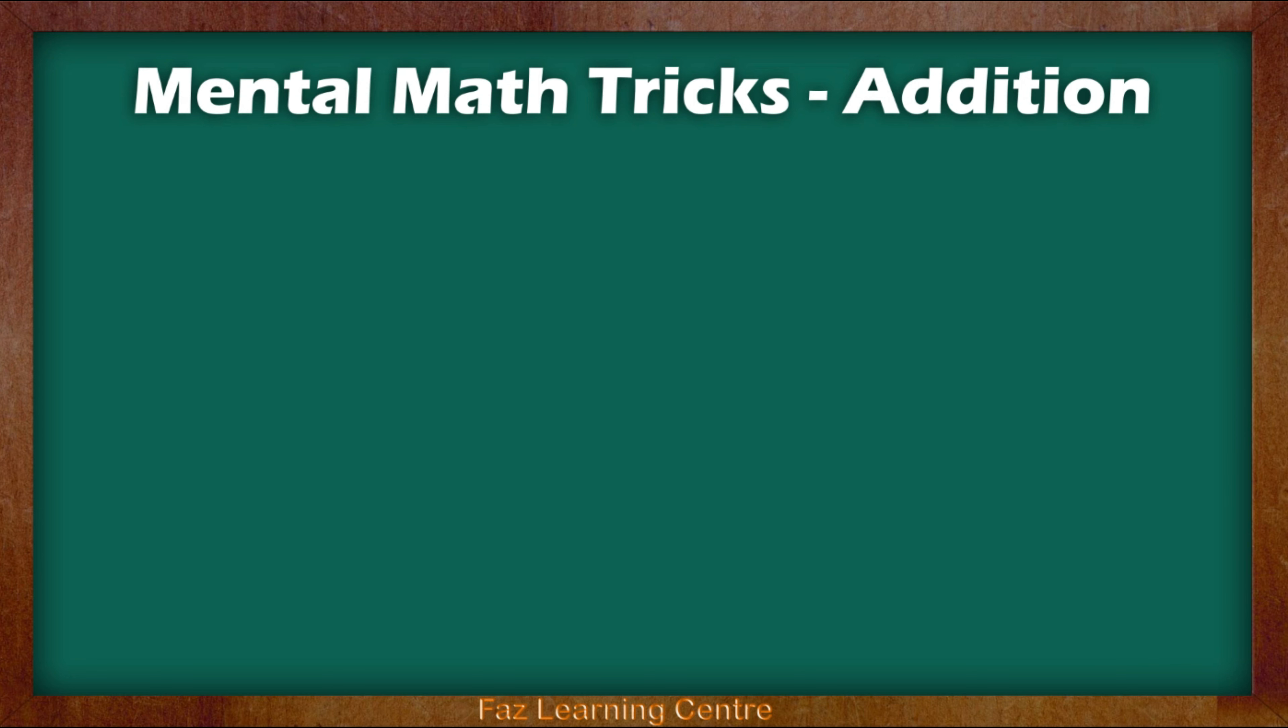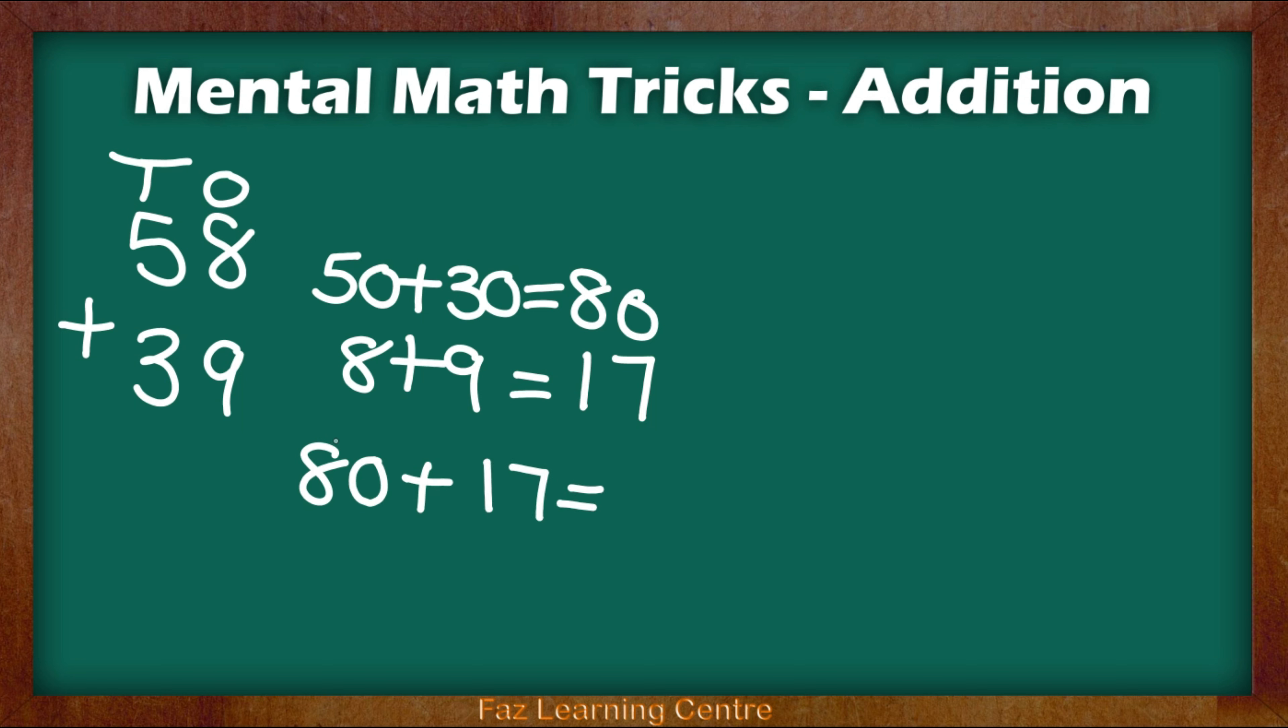The next example I have for you is 58 add 39. So the tens and ones. 5 tens add 3 tens which makes 50 add 30. That gives us 80. And then we do 8 add 9 which gives us 17. Now when we write them down, 80 add 17. You might be able to realize that 80 add another 10 will give you 90. And then we just drop the 7 down. Because 0 add 7 equals 7.